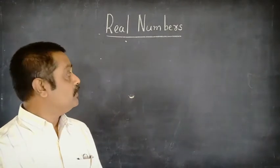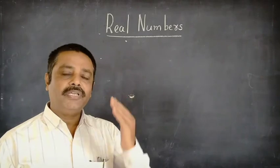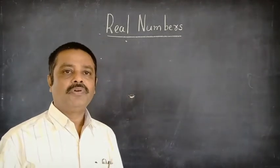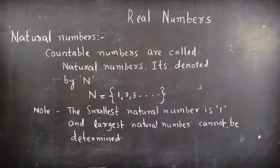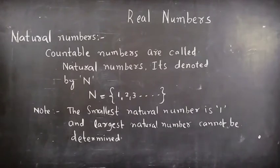What are the different numbers which we discussed already in our previous classes? We are going to recall these numbers. Natural numbers: countable numbers are called natural numbers and it is denoted by N. N = {1, 2, 3, ...}. Note: the smallest natural number is 1 and the largest number cannot be determined.